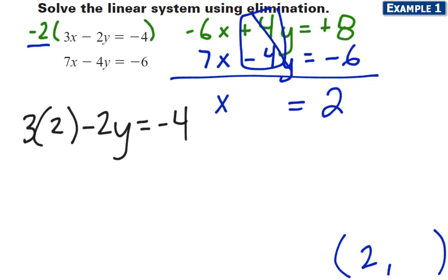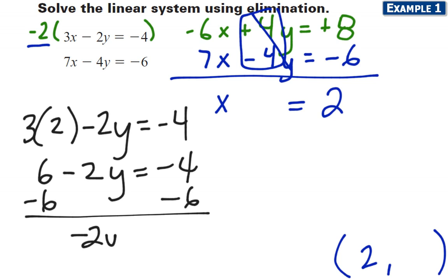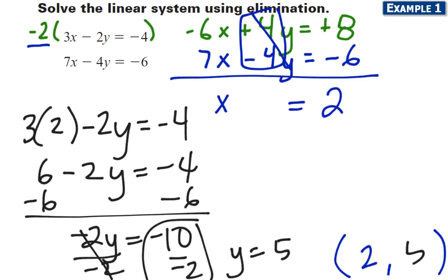And so now I've got only y as my variable. So I'm going to get 6 minus 2y equals negative 4. Subtract 6 from both sides. Now I've got negative 2y equals negative 10. Divide by negative 2, and that simplifies to y equals positive 5. So there's the other half of my answer. The solution to this system is 2 comma 5.